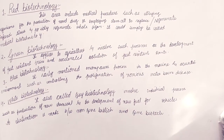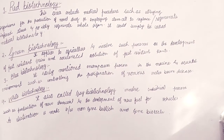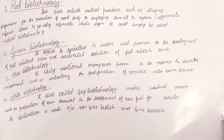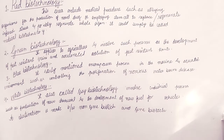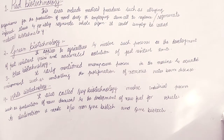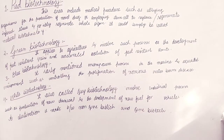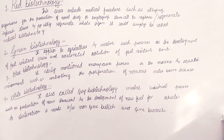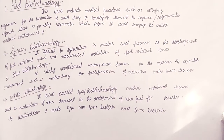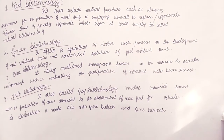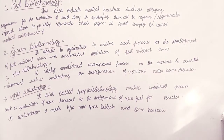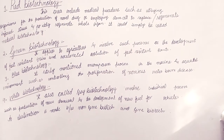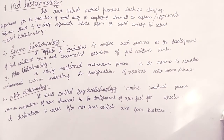The next one is white biotechnology, also called grey biotechnology. It involves industrial processes such as the production of new chemicals and the development of new fuels for vehicles. This is called white biotechnology.